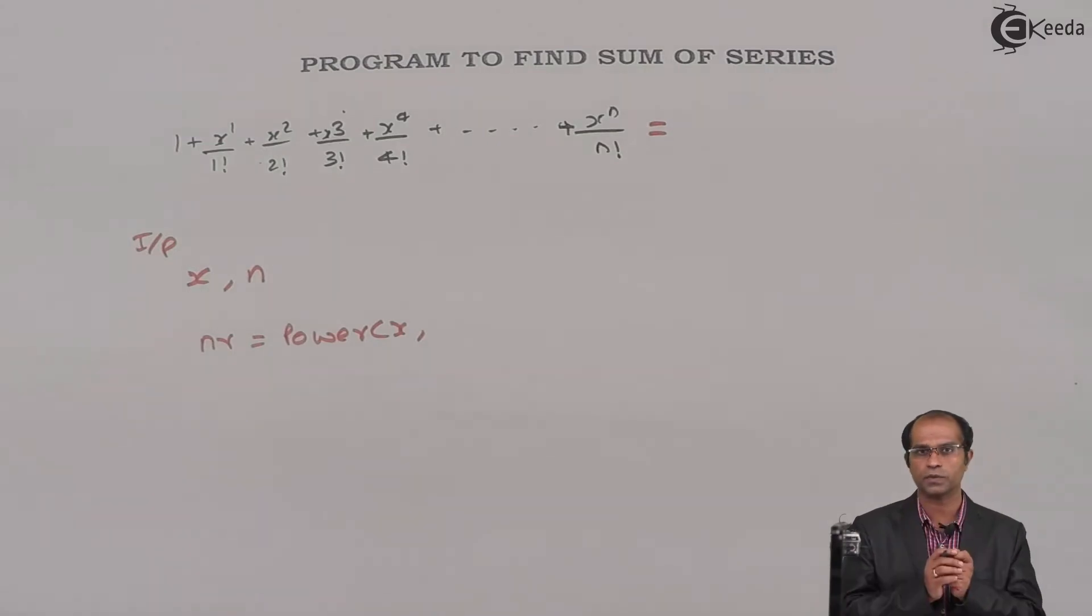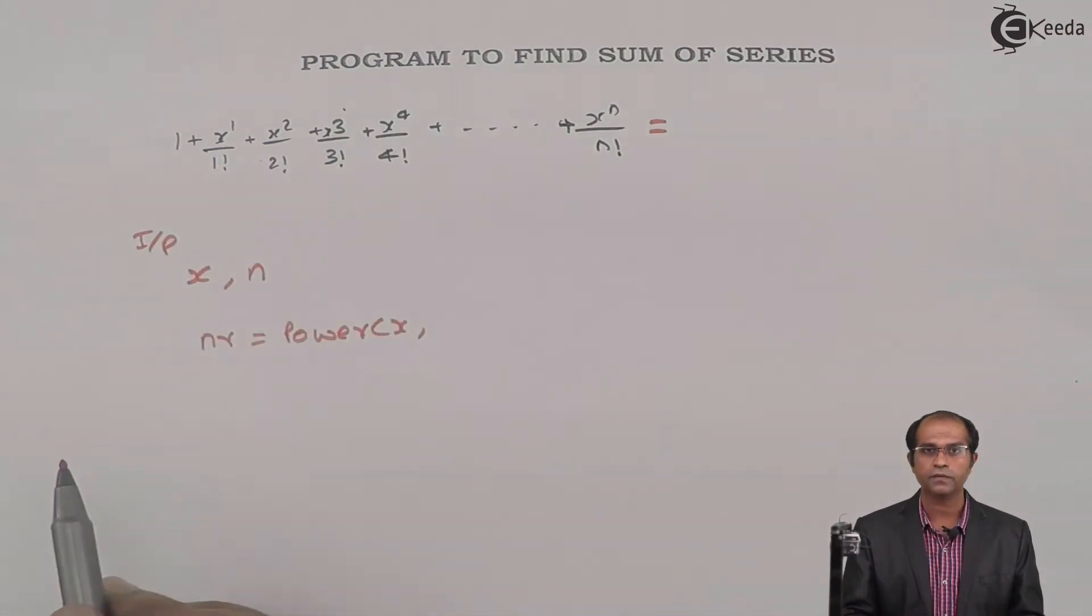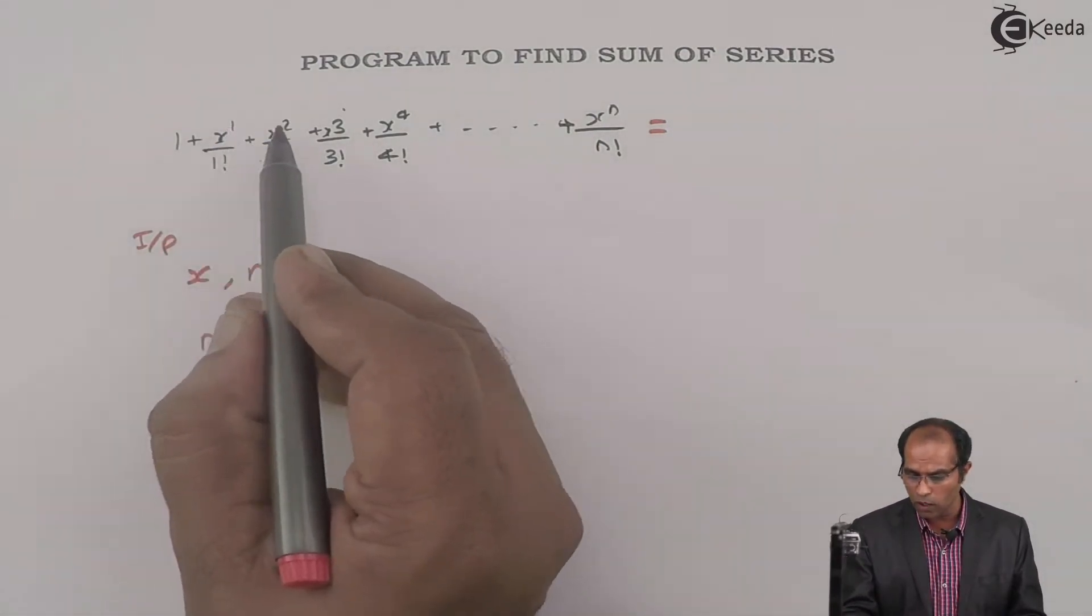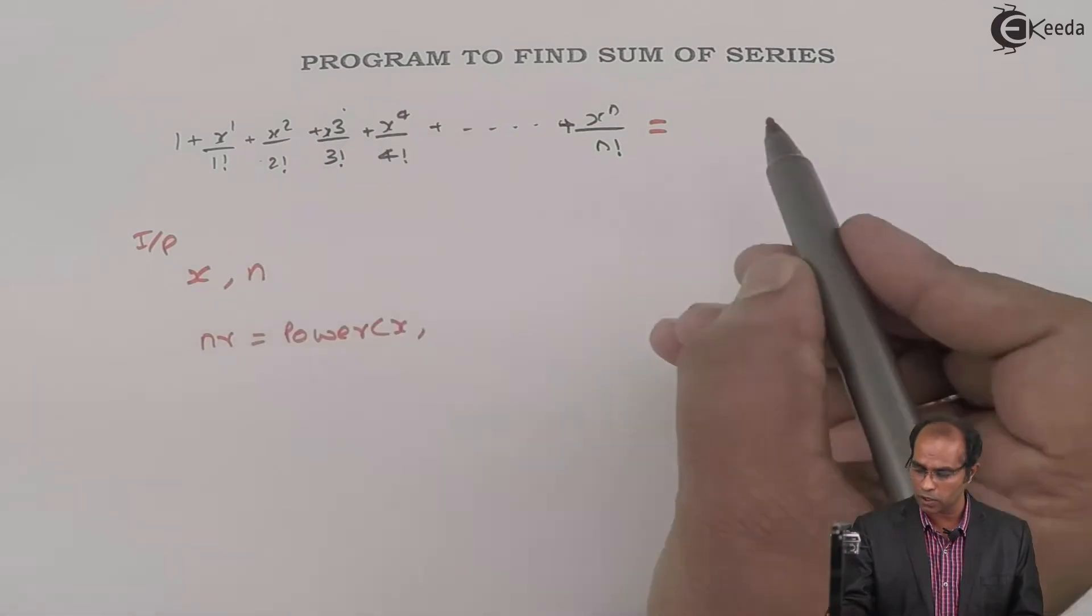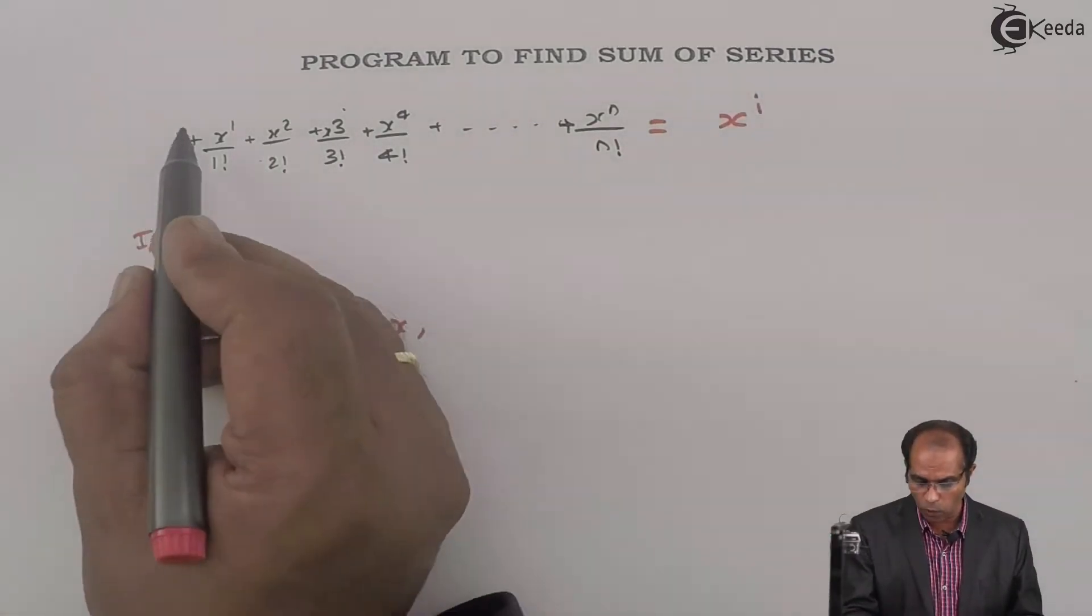Don't you feel that this numerator has the base component x, and the power is varying—1, 2, 3, 4? So can I say this as x^i? Because 1 can also be written as x^0.